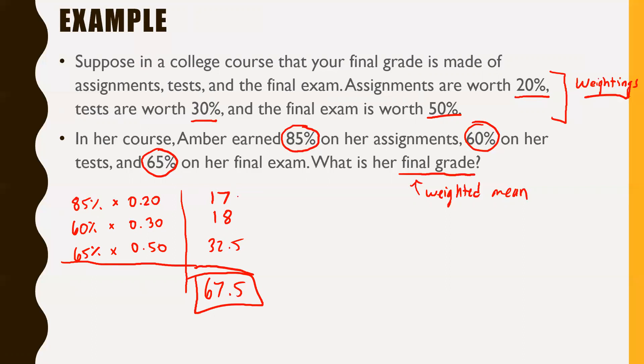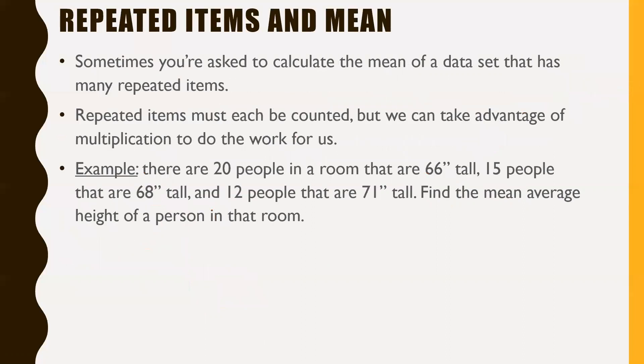We add these numbers together. 17 plus 18 plus 32.5 gives us 67.5. That actually is her final grade, so 67.5% is her final grade.